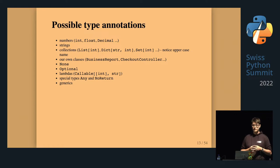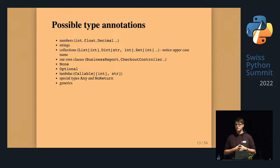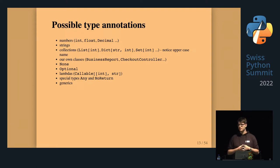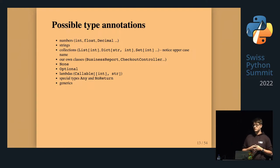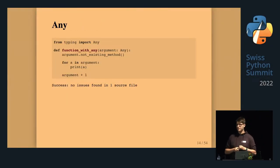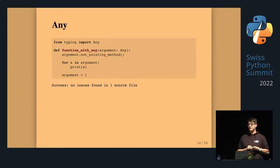You can type your program with a plethora of types: numbers, strings, collections — but with collections, just remember to use the uppercase names from the typing package, not the Python keyword list or dict. You can use your own classes for type annotations. There's None, there's Optional — a quite special type I'll talk about later. Lambdas have a cumbersome typing notation but you can still type them. There are two special types: Any and NoReturn. Let's go quickly through Any — it's a thing that you should know exists and never use in your code.